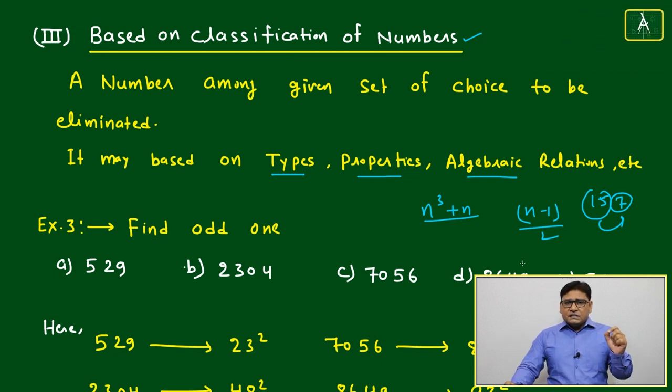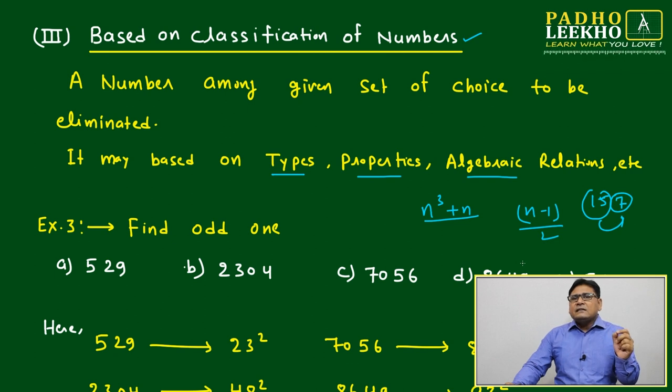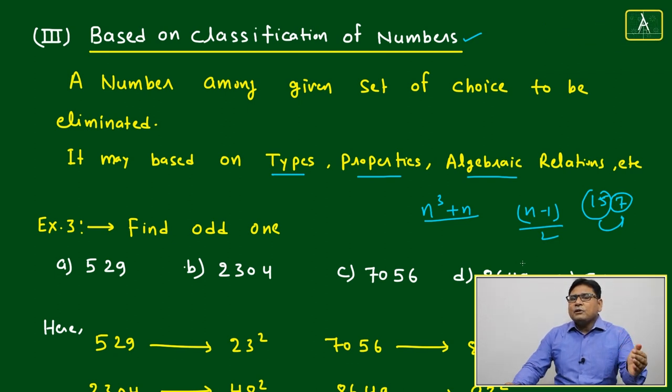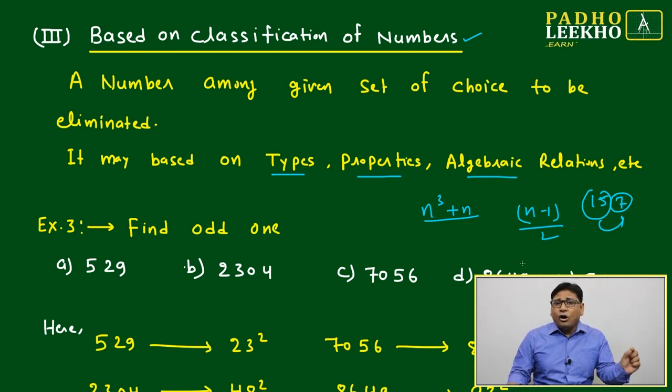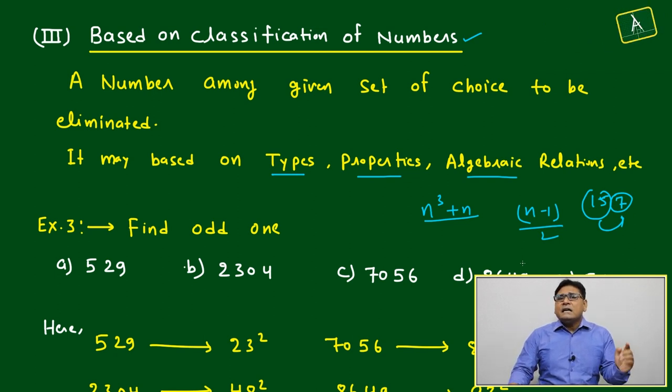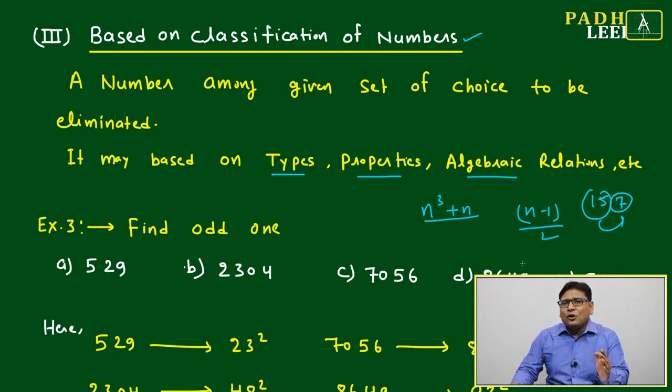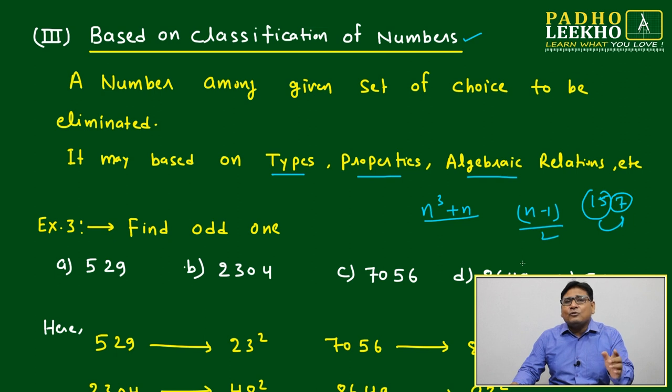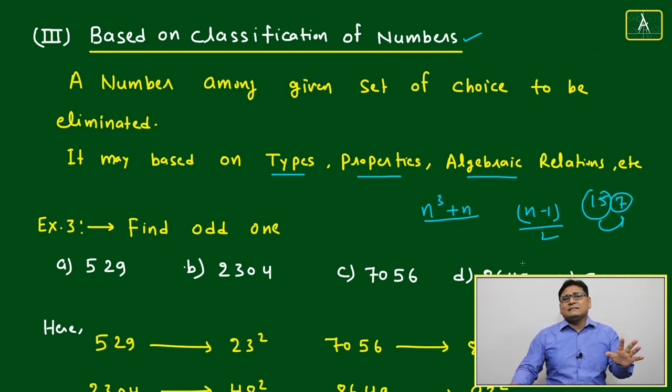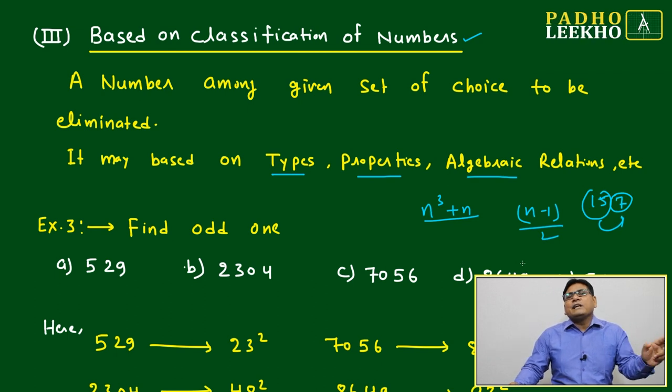If you have established any particular relation, is that relation followed by majority of numbers or not? Because odd can be only one, remaining three or four, whatever option choices are there, it must follow the same relation.